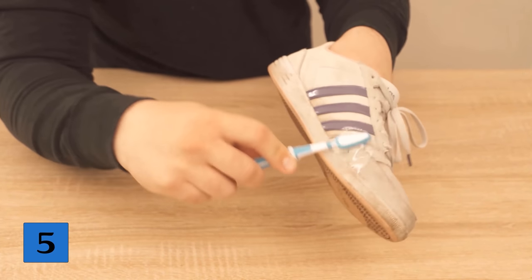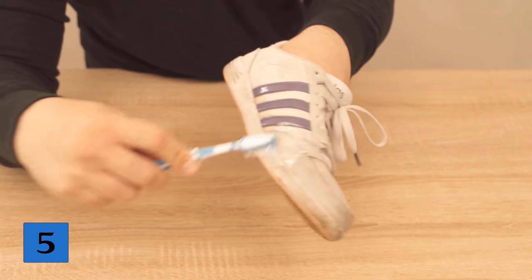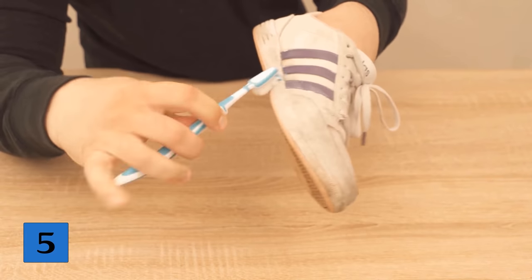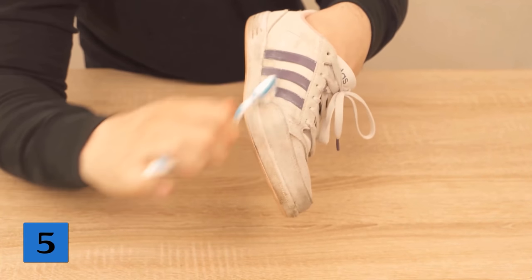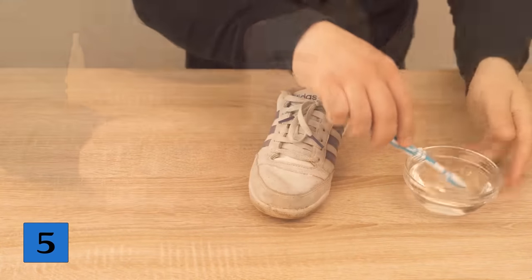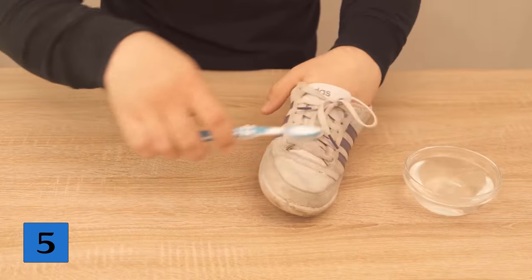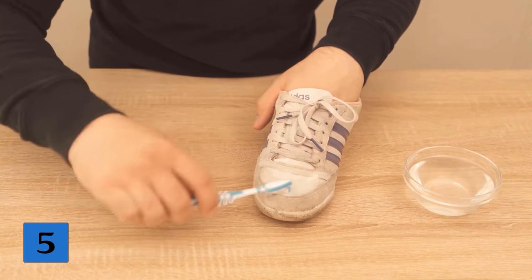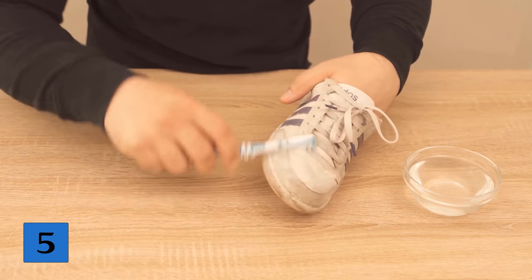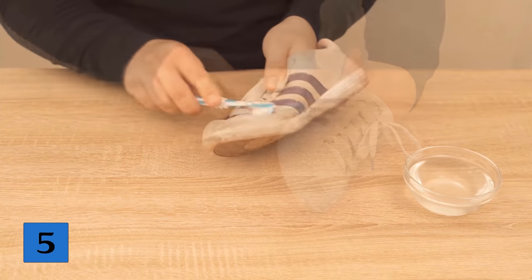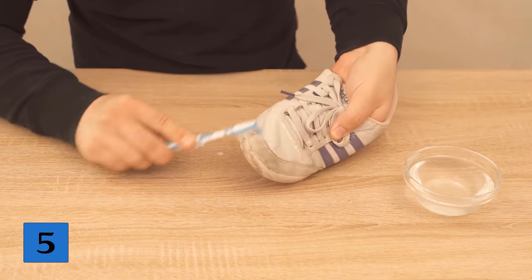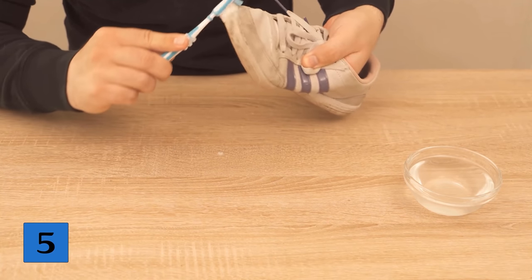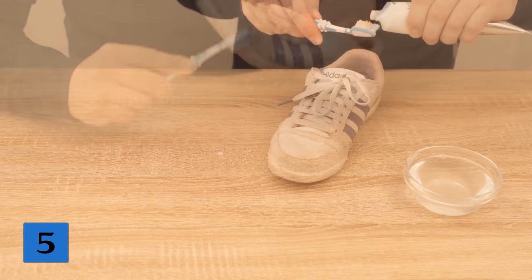Put some toothpaste on it and start rubbing your shoes. In between you should make the toothbrush wet from time to time, because then it works much easier. So it's best to add a bowl of water and go in here with the toothbrush from time to time. Now scrub your entire shoe with the toothpaste. This is a bit tedious, but if I show you the final result, then you will be convinced and want to clean your shoes only this way. Because this can be seen in any case.